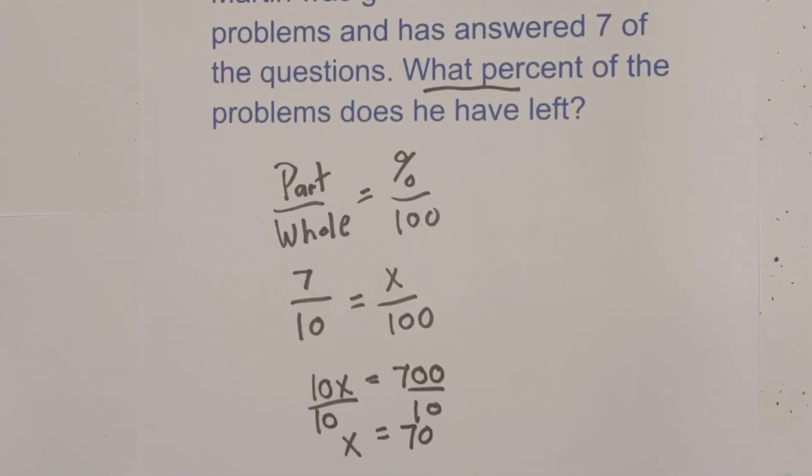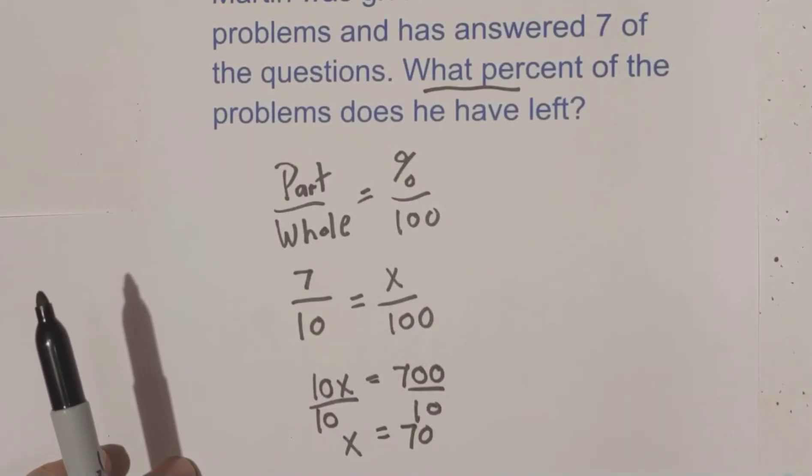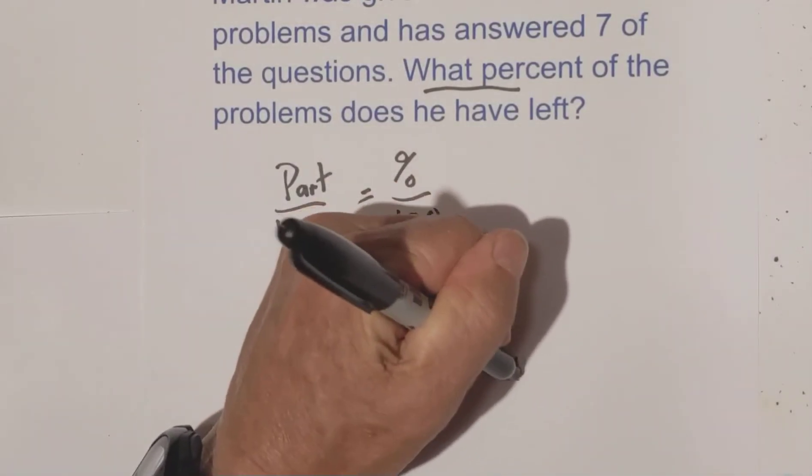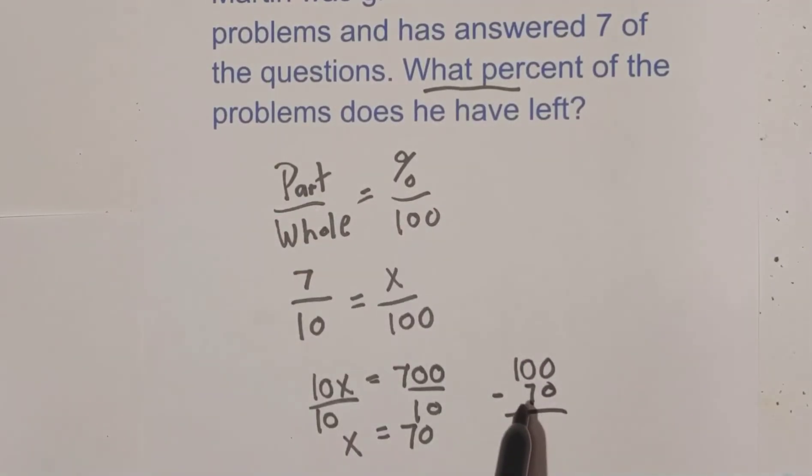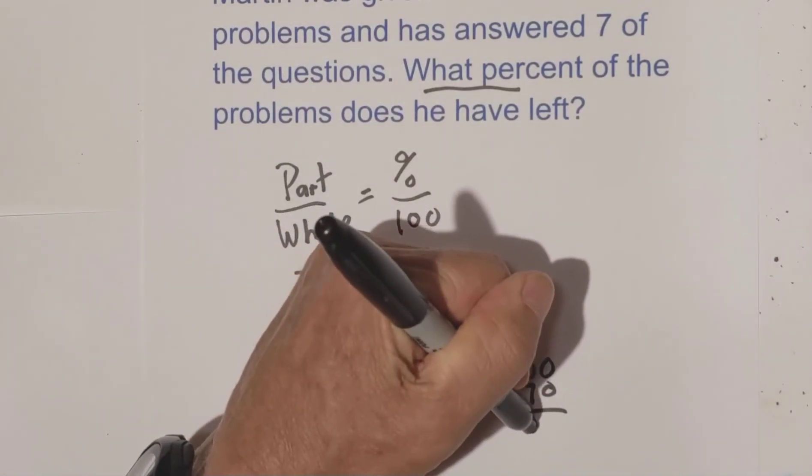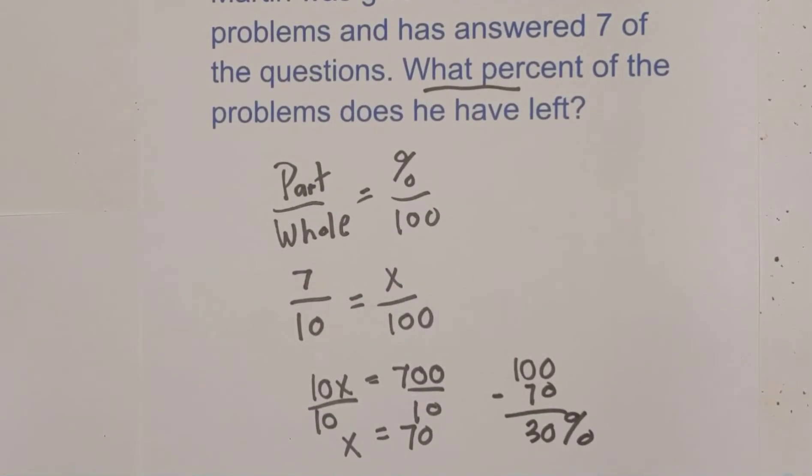Bring down the x and that is 70. So 70 is 70% but remember it's what percent does he have left. So now what we're going to have to do is take 100 minus 70 because that's how many he has completed but we want to know how many he has left and 100 minus 70 is 30. So he has 30% left. Let's try a couple more of these.